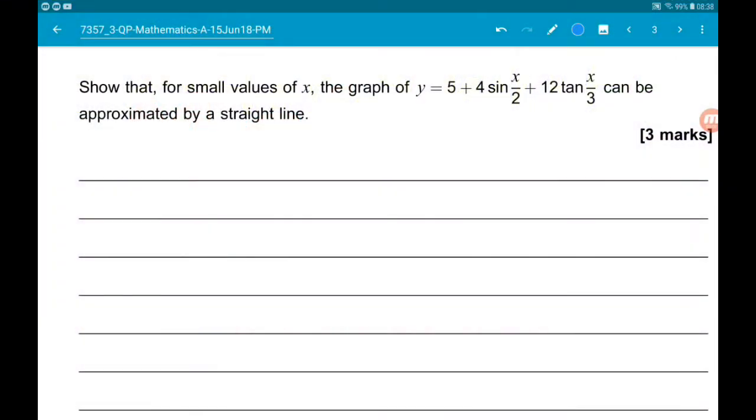Okay, question 5. We have trigonometry with small values, so we want to show that for small values of x, the graph of y equals 5 plus 4 sine x over 2 plus 12 tan x over 3 can be approximated by a straight line.